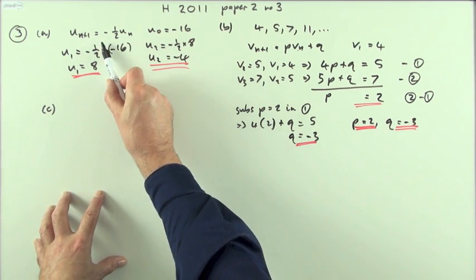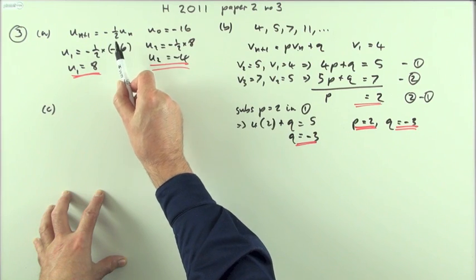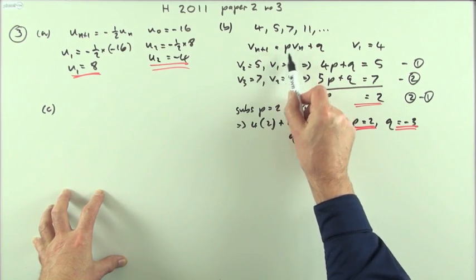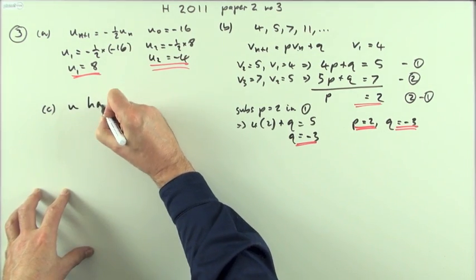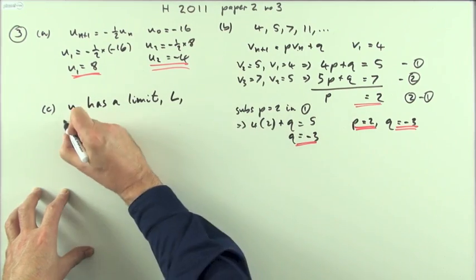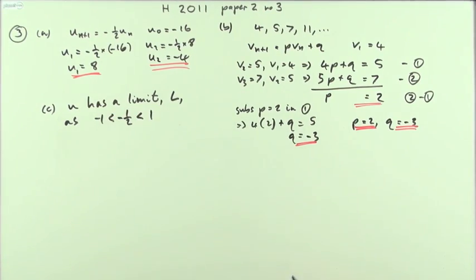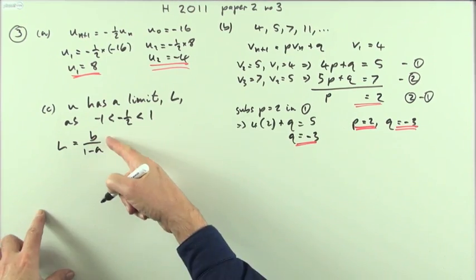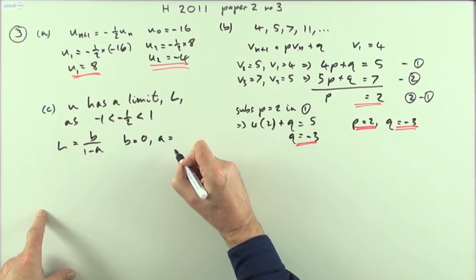This first one does have a limit because the multiplying factor negative 1 half is a proper fraction, so it's between 1 and negative 1. This sequence V does not have a limit because the multiplying factor 2 is greater than 1. U has a limit, may as well call it L here, as the factor negative 1 half lies between negative 1 and 1. To find that limit, you can use the formula B over 1 minus A, where B is the added number, which would be 0.